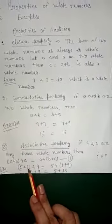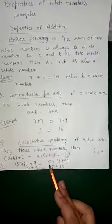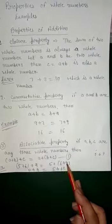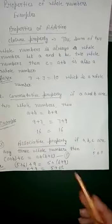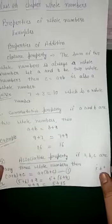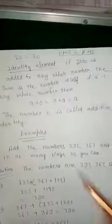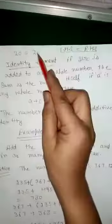Left-hand side: 5 + 6 = 11, then 11 + 9 = 20. Right-hand side: 6 + 9 = 15, then 5 + 15 = 20. Therefore 20 = 20. This is a whole number and left-hand side is equal to right-hand side.